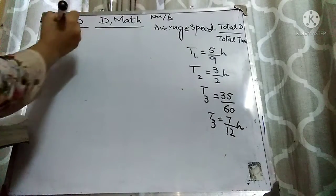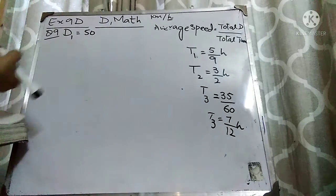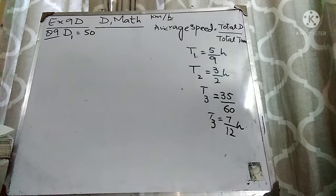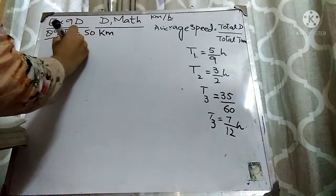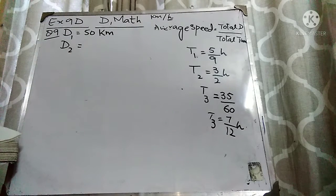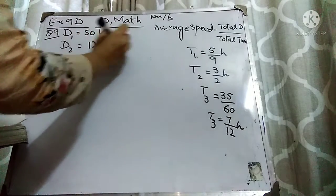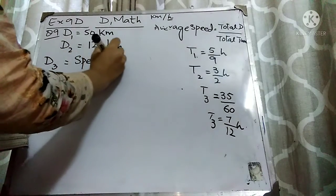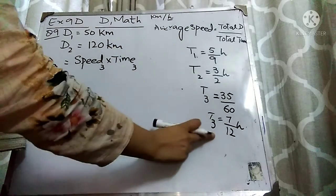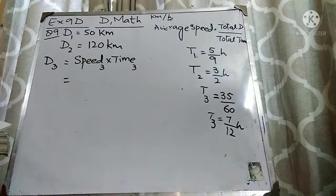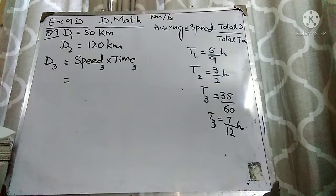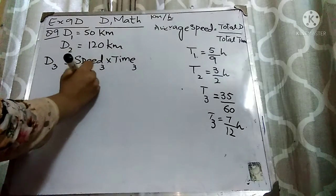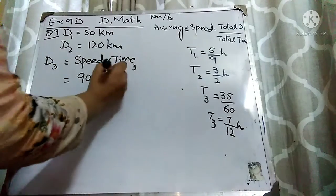Distance 1 is 50 kilometers and Distance 2 is 120 kilometers. Since the answer must be in kilometers per hour, the distance must also be in kilometers. Now we find Distance 3. The formula is speed multiplied by time: Speed 3 times Time 3. The speed is 90 km per hour and Time 3 is 7/12 hours, so the time is already in hours — no conversion needed. So Distance 3 equals 90 multiplied by 7/12.